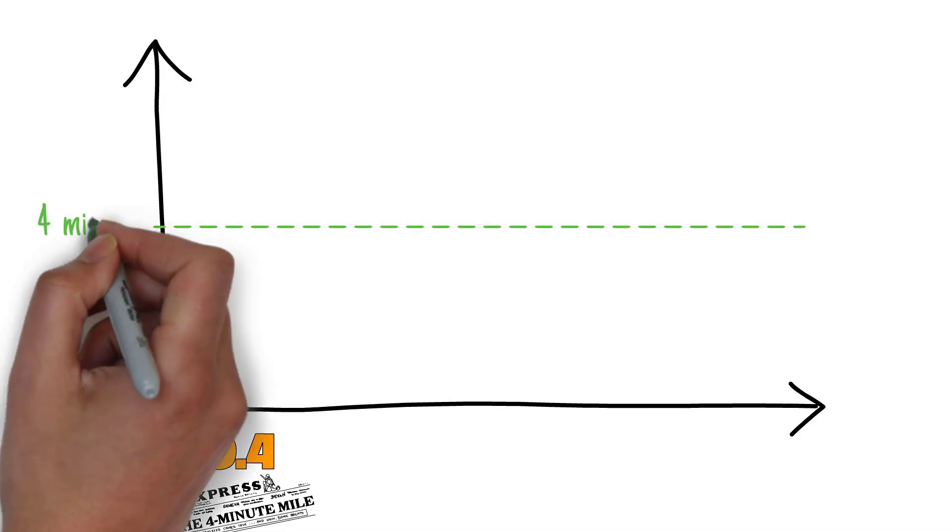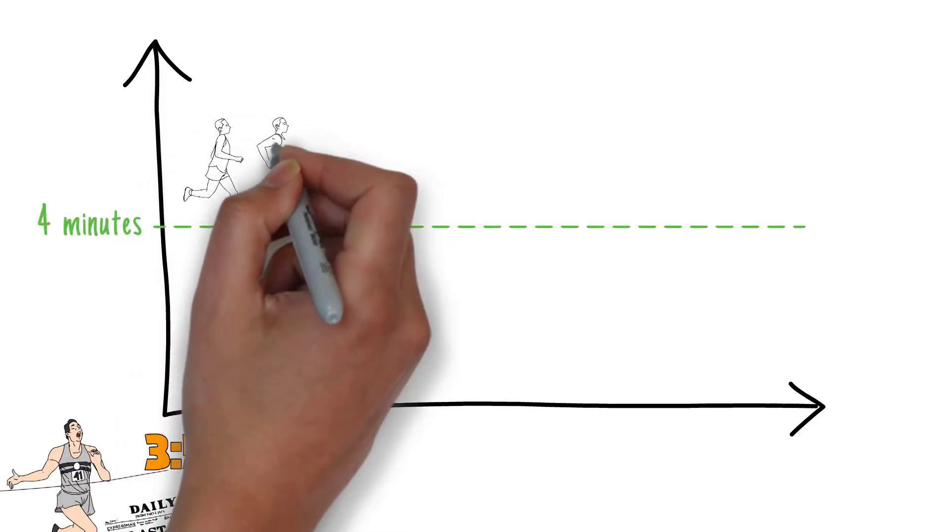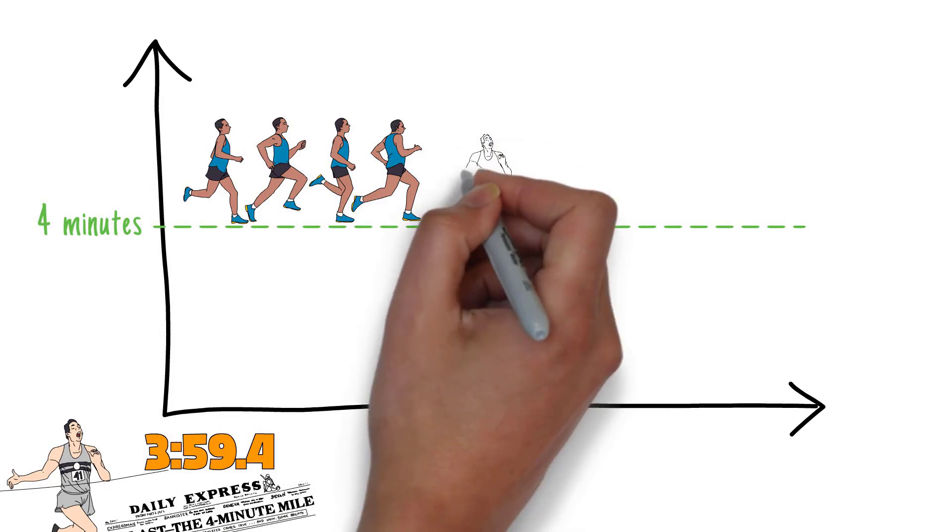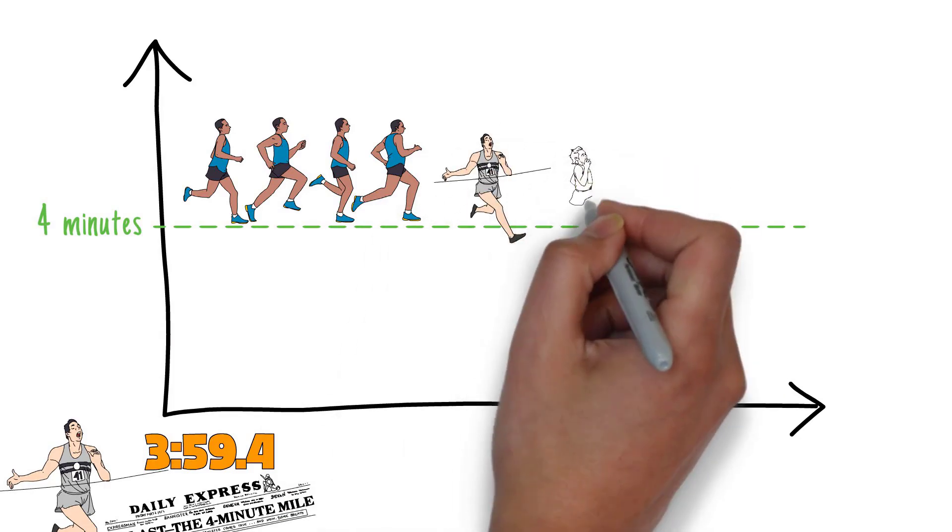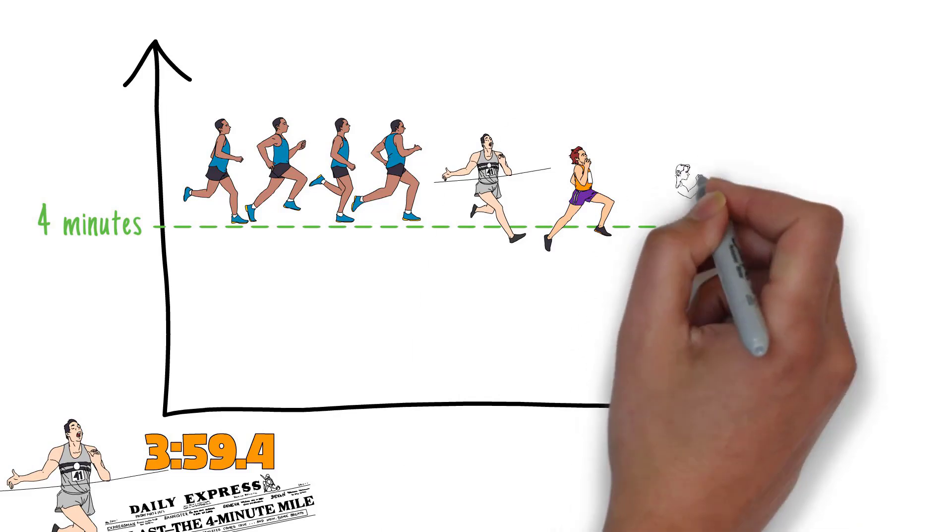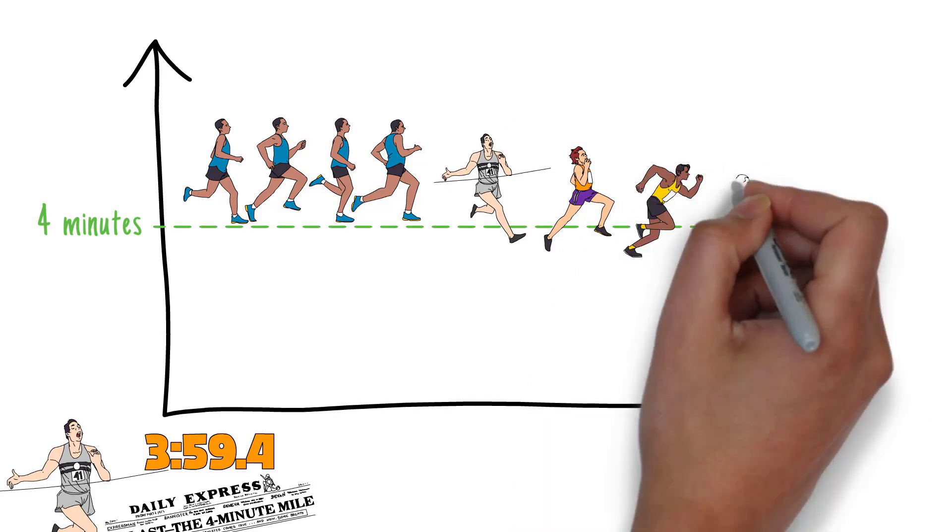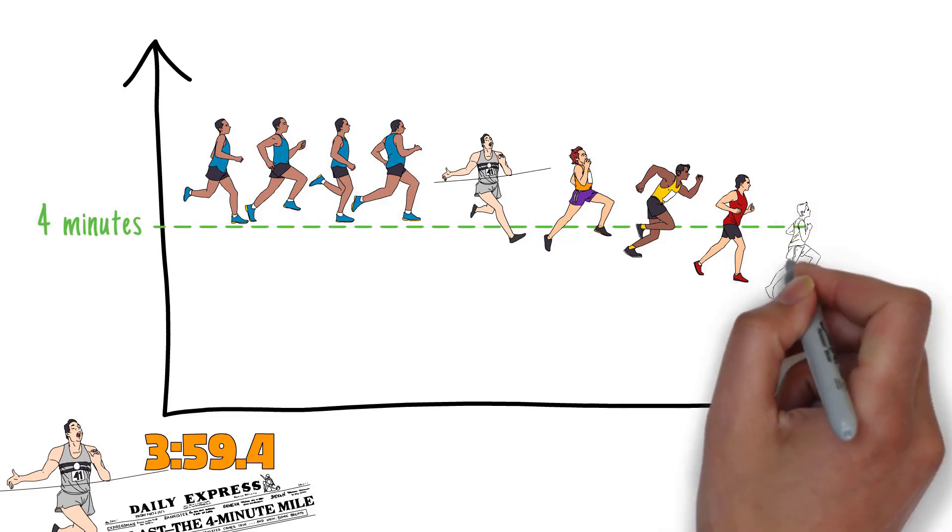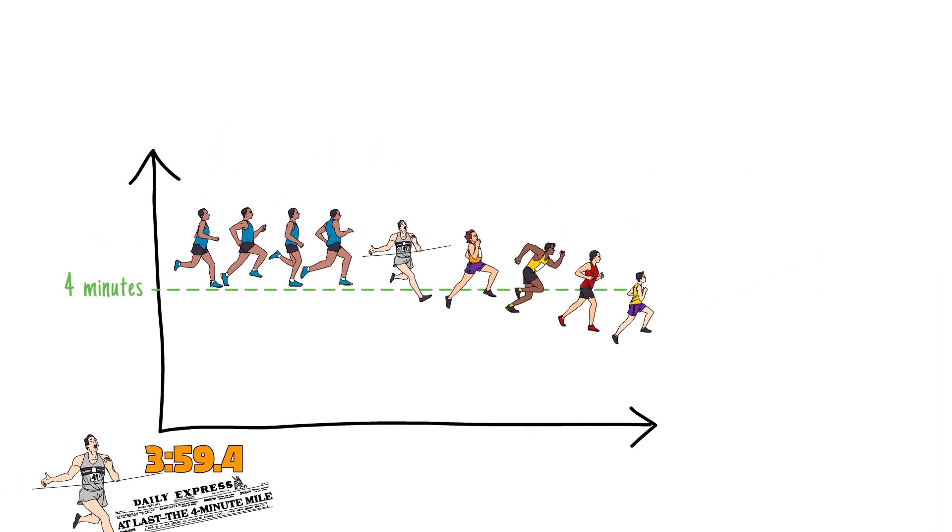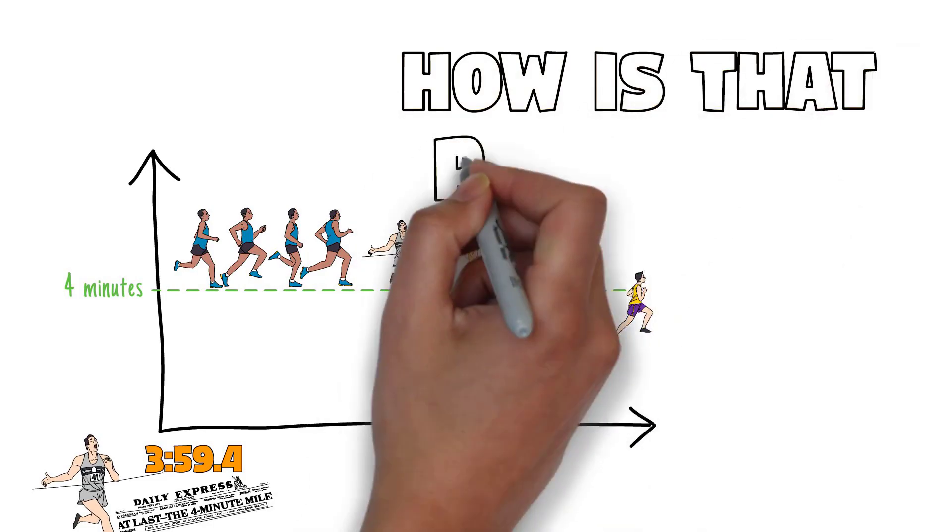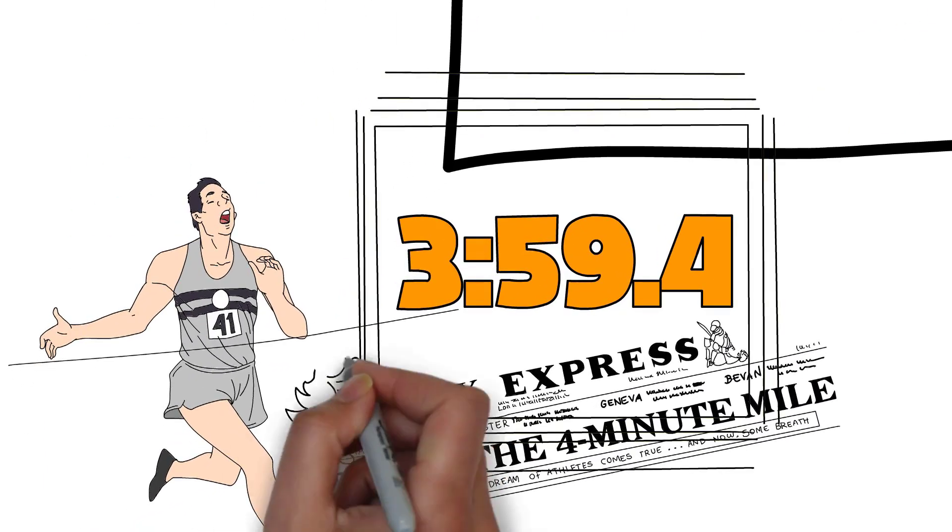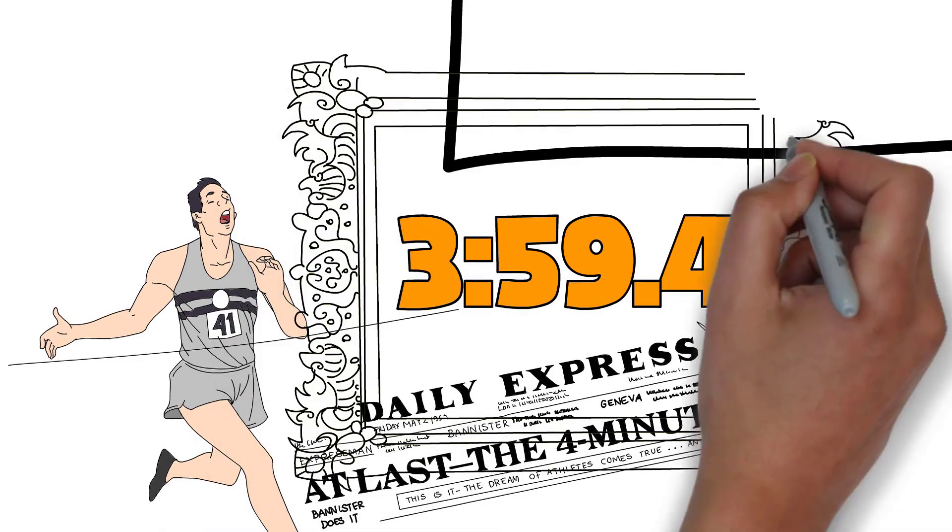If you look at mile times, they dropped about a quarter second per decade for 60, 70 years leading up to it. But Roger Bannister runs the first four-minute mile, and then a month later somebody breaks his record. A couple months later somebody else breaks his record. In fact, within 10 years teenagers had broken that record.